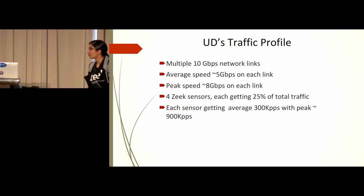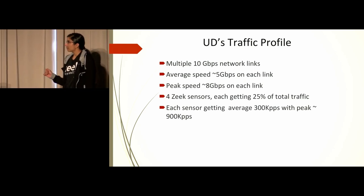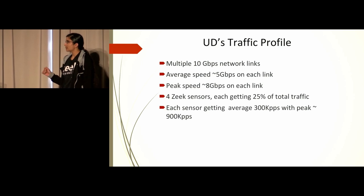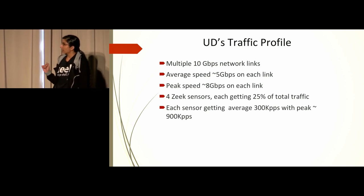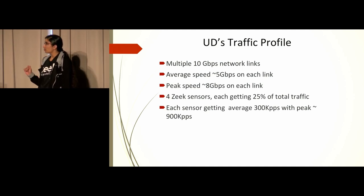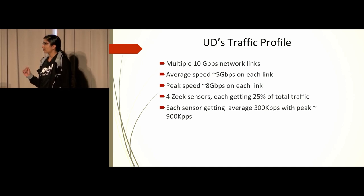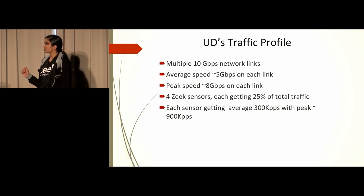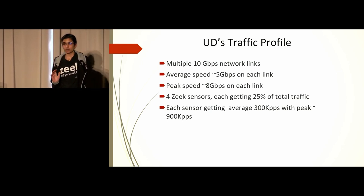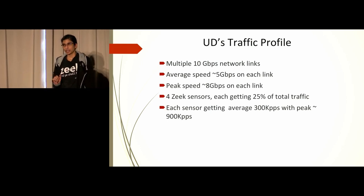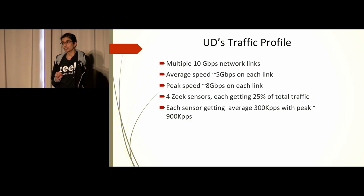Each worker gets 25% of the total traffic and is capable of handling up to 10 Gbps at peak hours. For packet-per-second rate, each box gets on average 300,000 packets per second, with a peak of almost one million packets per second without any capture loss.